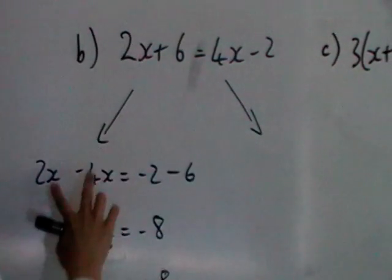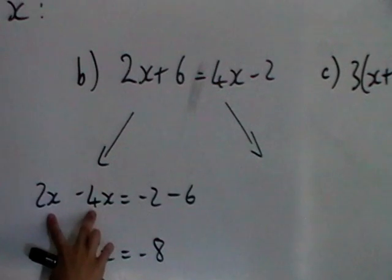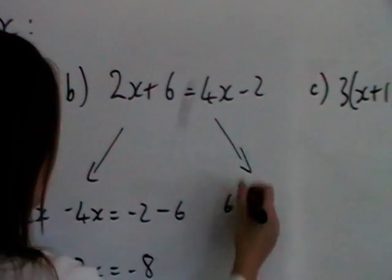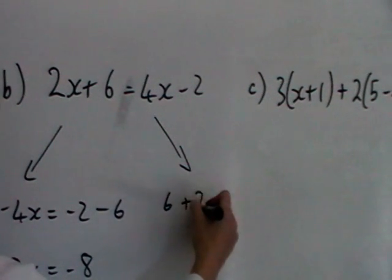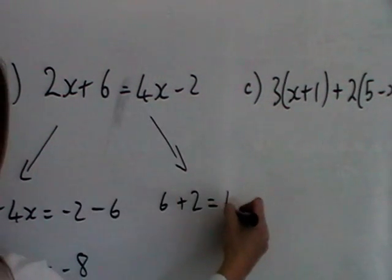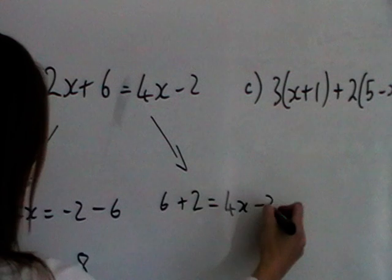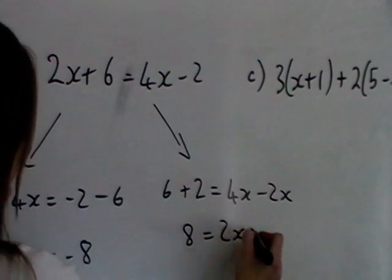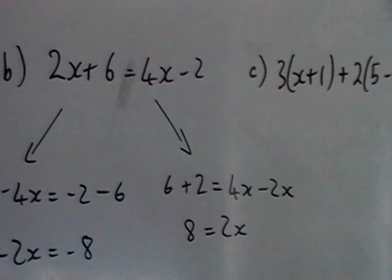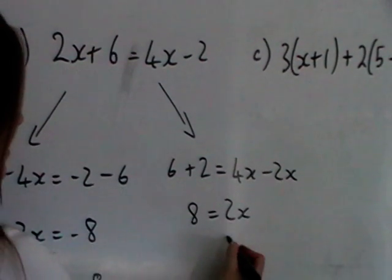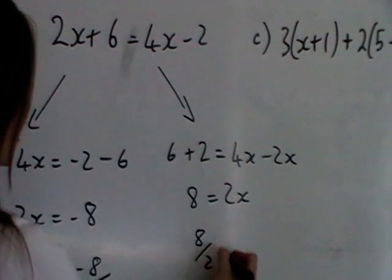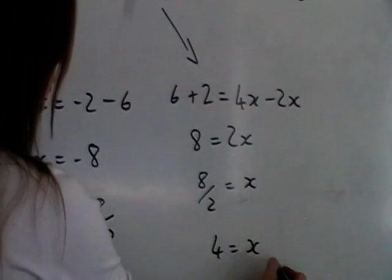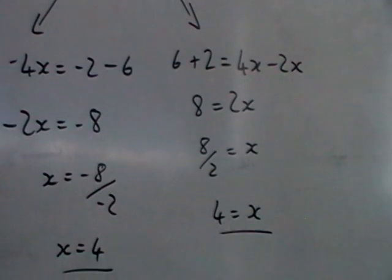Alternatively, on the other side, instead of getting your x's on this side, if you wanted to get your x's on that side, then you'd leave the 6, bring the 2 over which will then add. You have the 4x and then you subtract the 2x, so you end up with 8 is equal to 2x. This way you're keeping everything positive. Now to get x on its own, you divide both sides by 2, and 8 divided by 2 just gives you 4. So either way, you end up with the same answer.